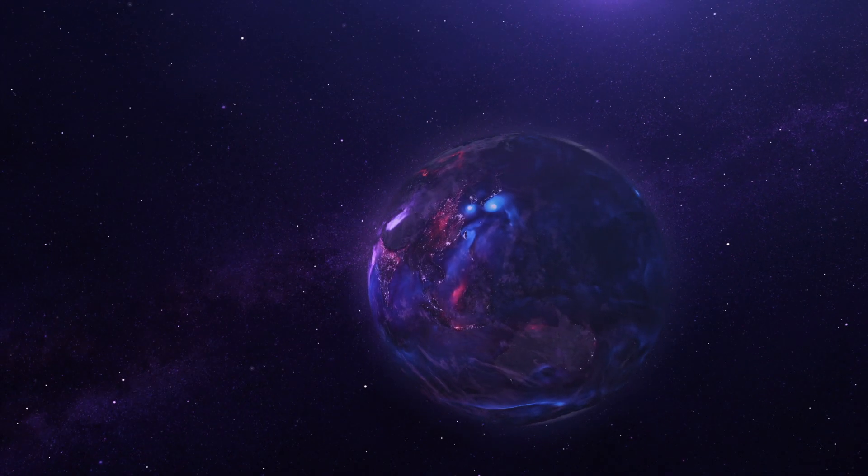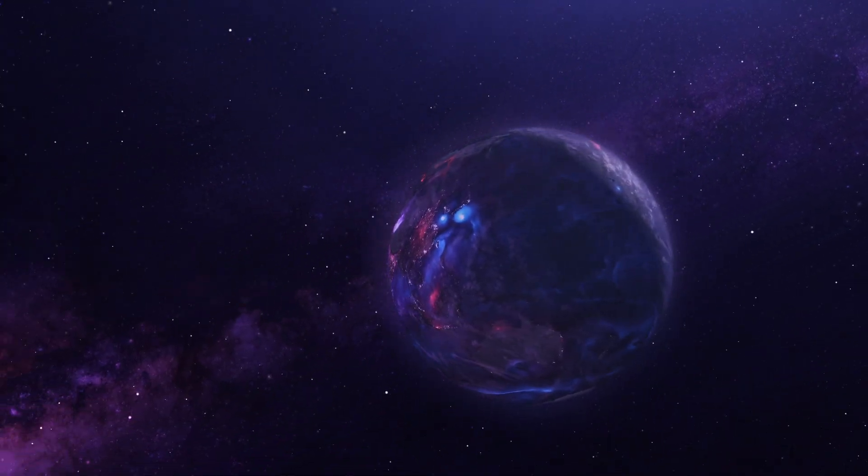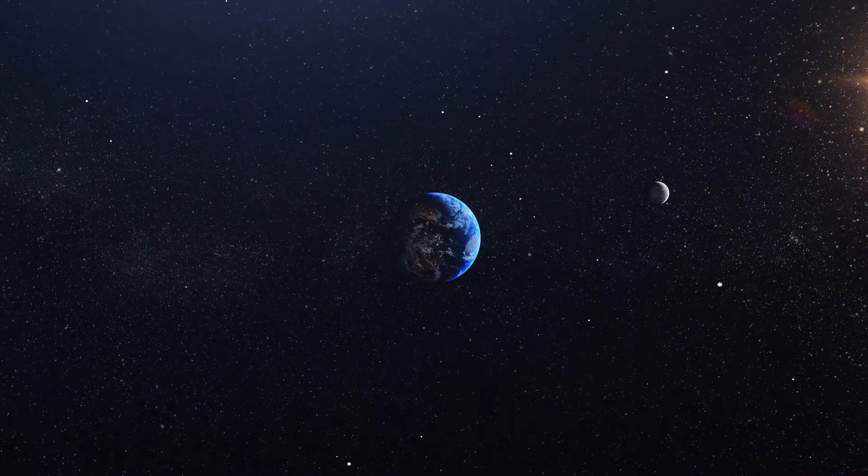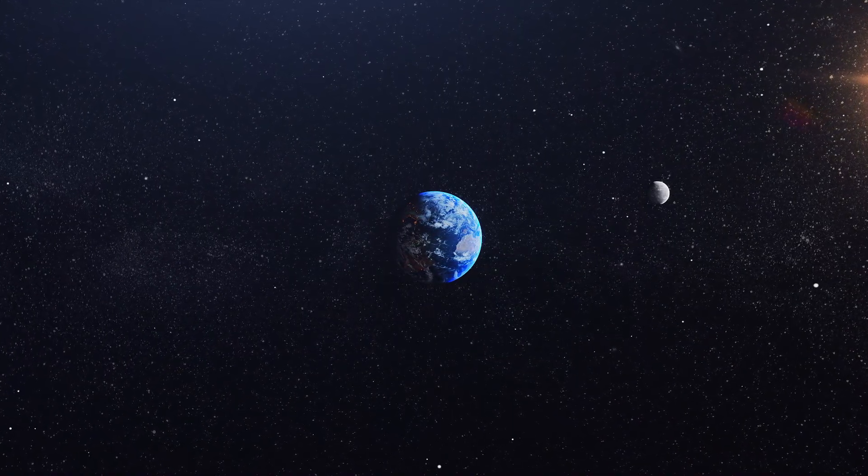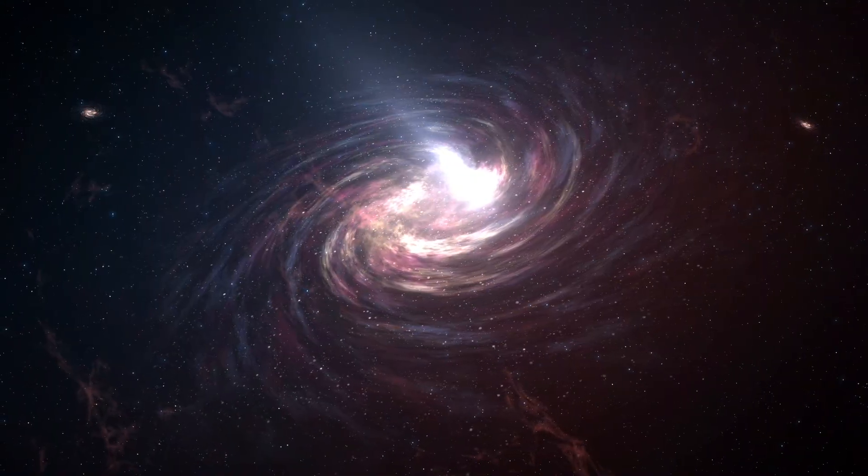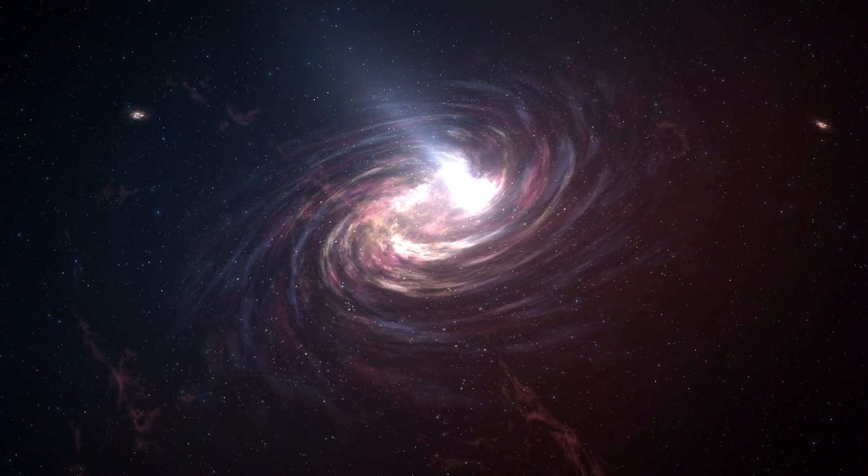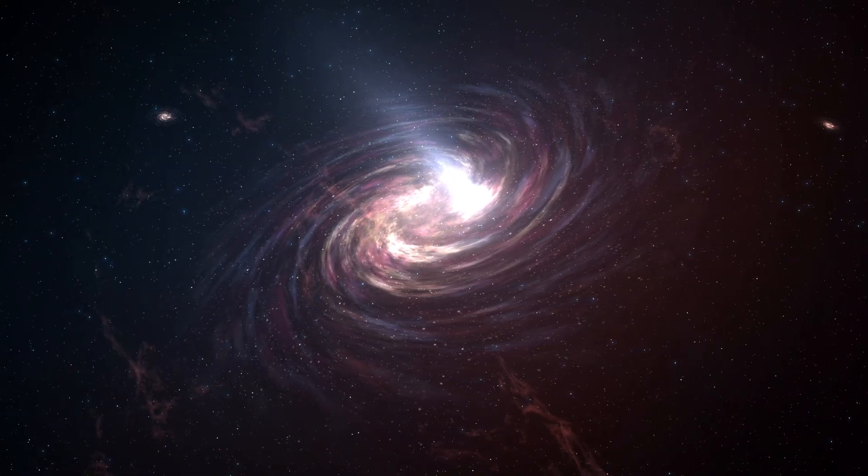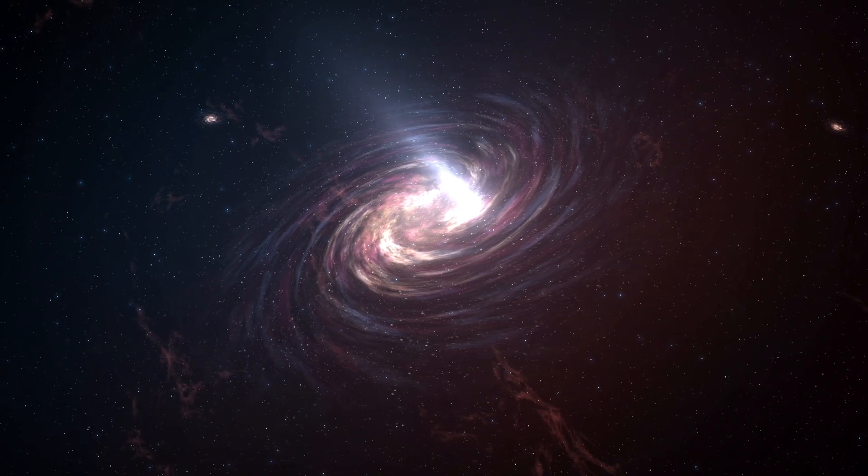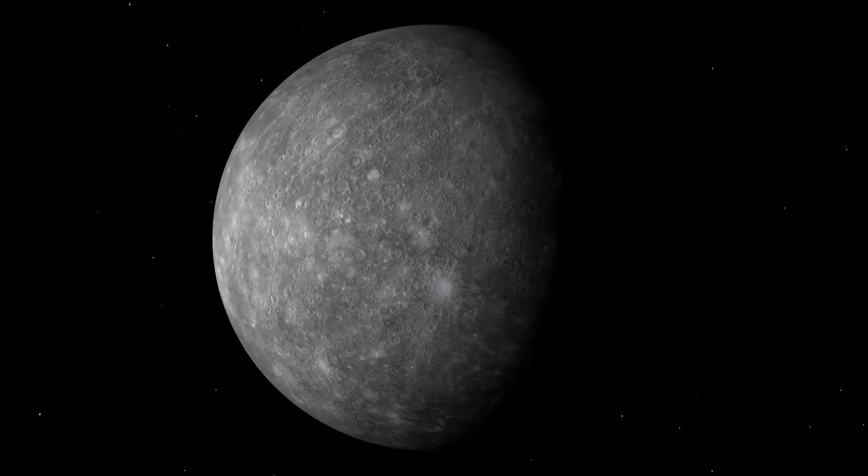While gas giants around HD14283 are plausible, rocky worlds like Earth or Mars, which are composed of heavier elements like iron, oxygen and silicon, would be much harder to form. When HD14283 was born, heavy elements were so scarce that it's difficult to envision how it could have accumulated enough material from the primordial nebula to develop any terrestrial planets.